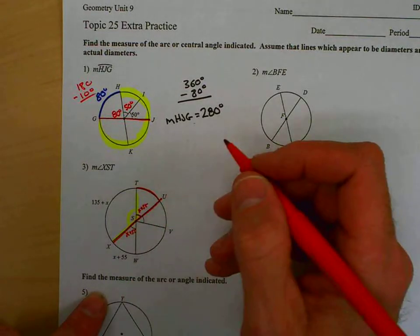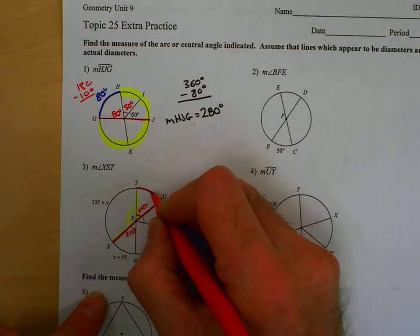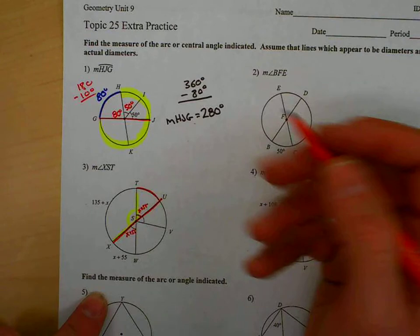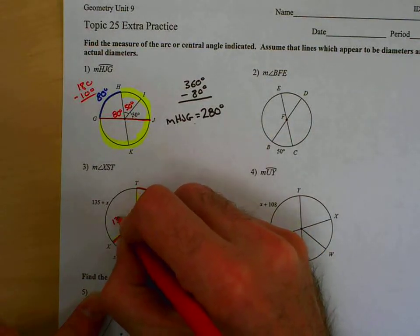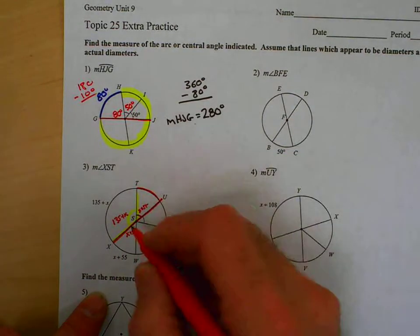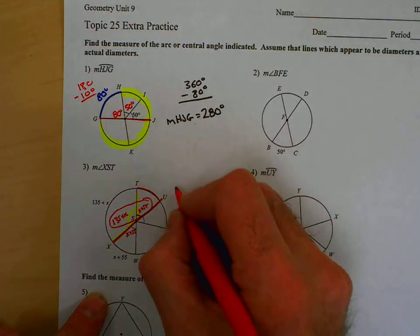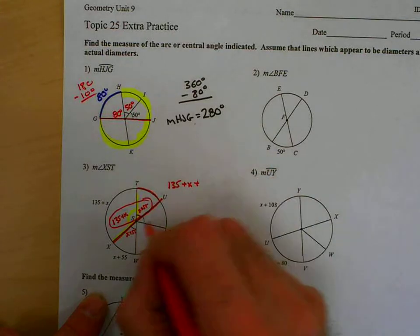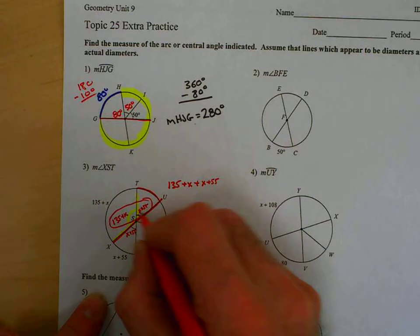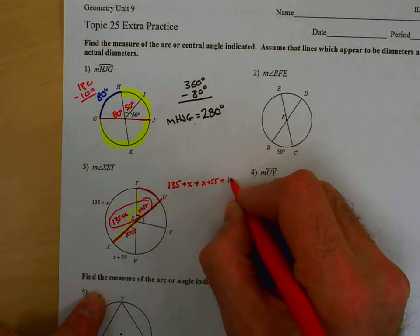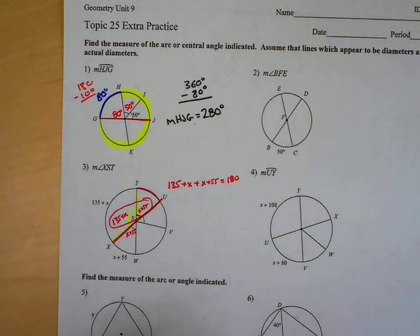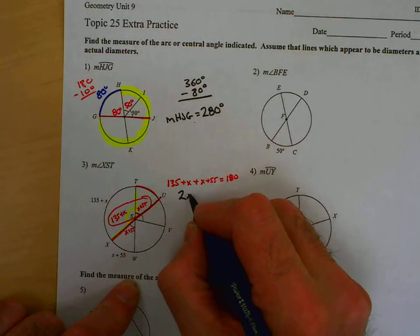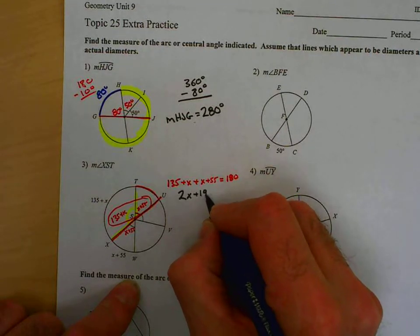Well, actually, you can take this arc out here and make that a semicircle, or you can bring this arc into the central angle. Remember, central angles and arcs are the same, so that's going to make this 135 plus X. These two angles should add up, 135 plus X, plus the other angle, X plus 55, should make a linear pair, which is 180 degrees. Now, working through that, I have 2X plus 190 equals 180.